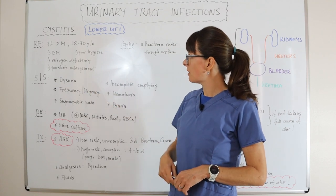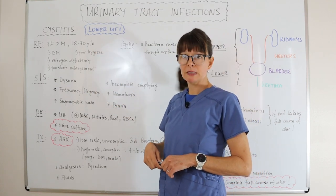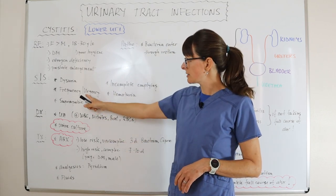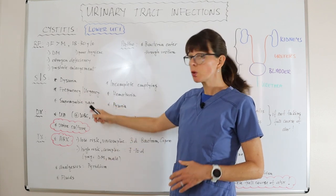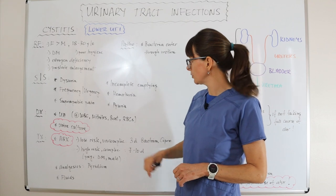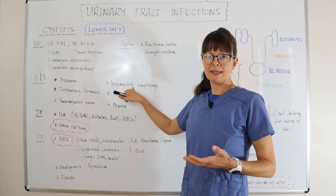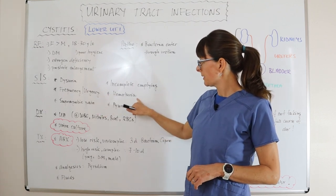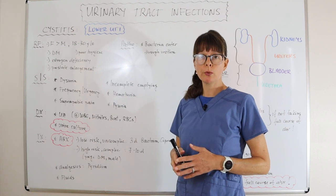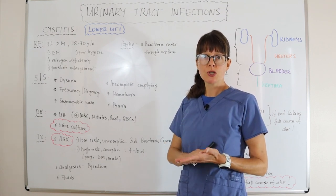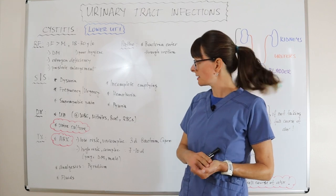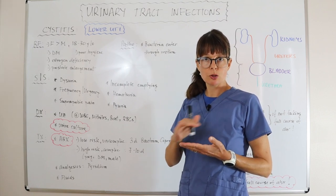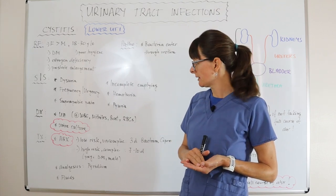Signs and symptoms of lower urinary tract infection or cystitis include dysuria — meaning painful urination — as well as frequency and urgency of urination. Suprapubic pain occurs because the bladder is tender, and there may be a sensation of incomplete emptying. There might be hematuria — blood in the urine — whether that's visible gross hematuria or microscopic and detectable on a urine dipstick. Pyuria, meaning pus in the urine, may make the urine sample appear quite cloudy with visible bacteria.